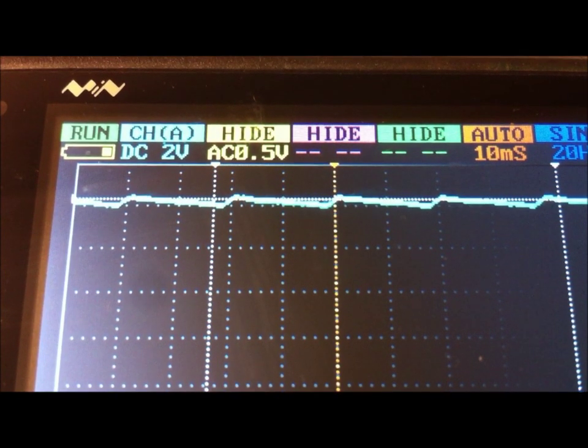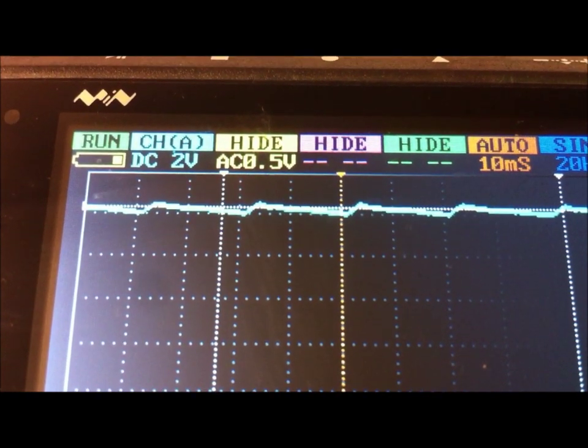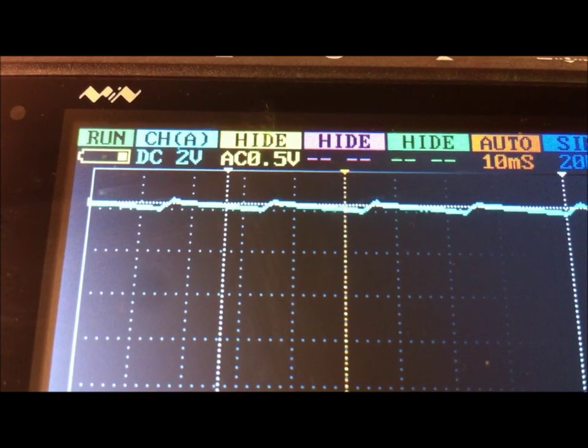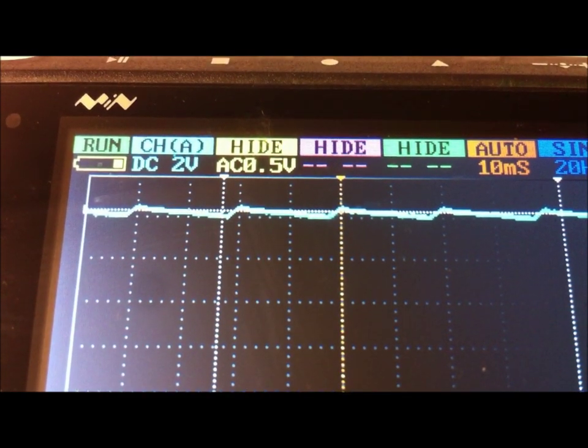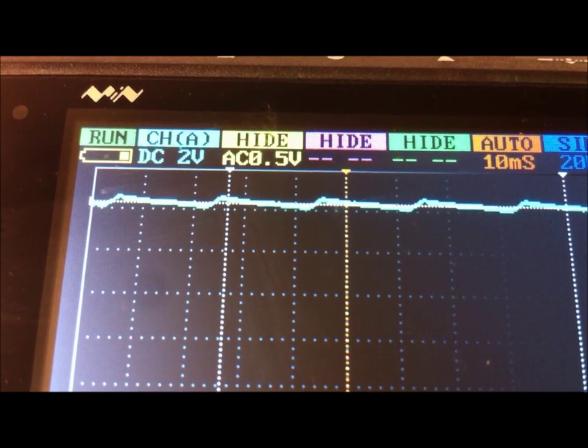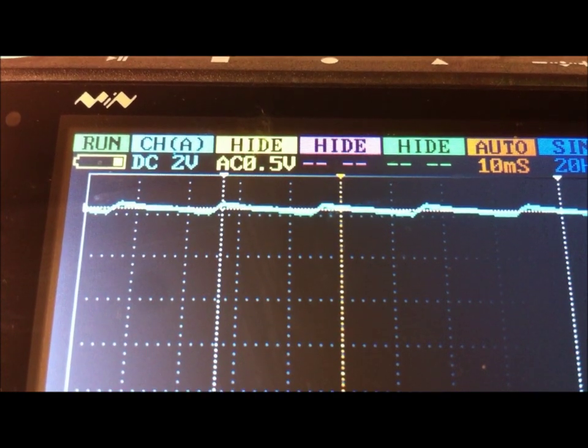As you can see by this new waveform that has been smoothed by our 5600 microfarad 40 volt cap, the ripple voltage is less than a volt now. We're probably looking at, you know, three quarters of a volt of ripple voltage. So that's pretty acceptable by most people's standards depending on the application.